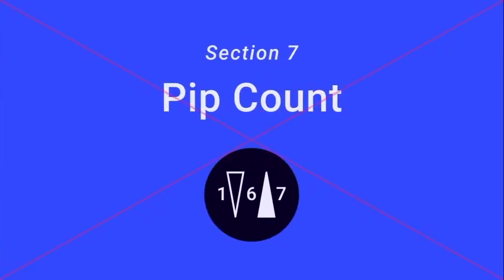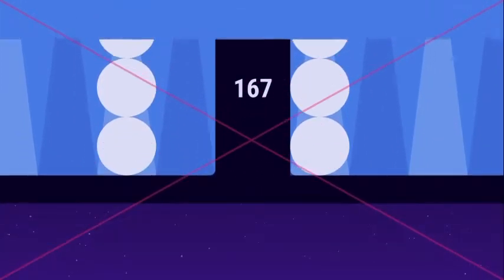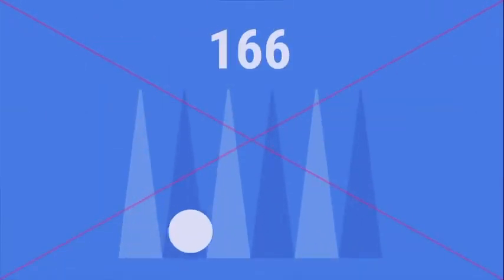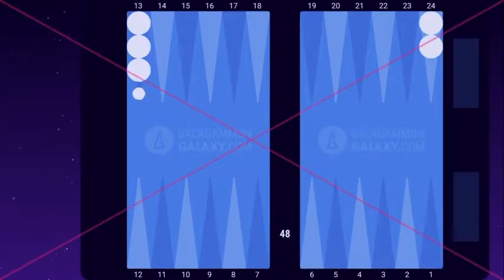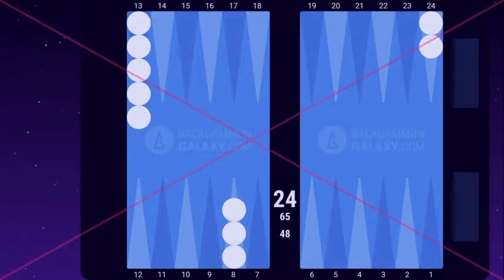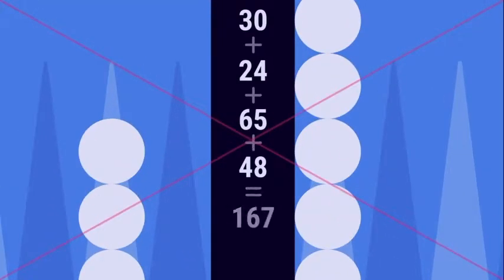Section 7: Pip Count. In the beginning of the game, both players have 167 pips. Pips is the number of points you need to move your checkers in order to bare off all of them. 2 checkers on a 24 point. Each checker on this point needs to move 24 pips to be borne off. 2 x 24 equals 48 pips. 5 checkers on 13. 5 x 13 equals 65 pips. 3 checkers on 8. 3 x 8 equals 24 pips. And 5 checkers on 6. 5 x 6 equals 30 pips. This makes the total of 167 pips.